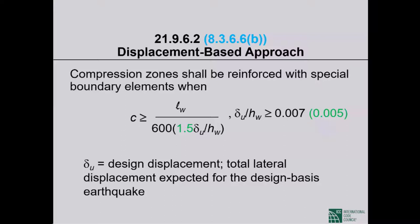In practical terms: elastically analyze the building under code-prescribed seismic forces to obtain the deflection at the top of the shear wall, then amplify that deflection by the C sub D deflection amplification factor for the structural system. That amplified value is delta sub U — the displacement at the top caused by code-prescribed forces amplified by C sub D.